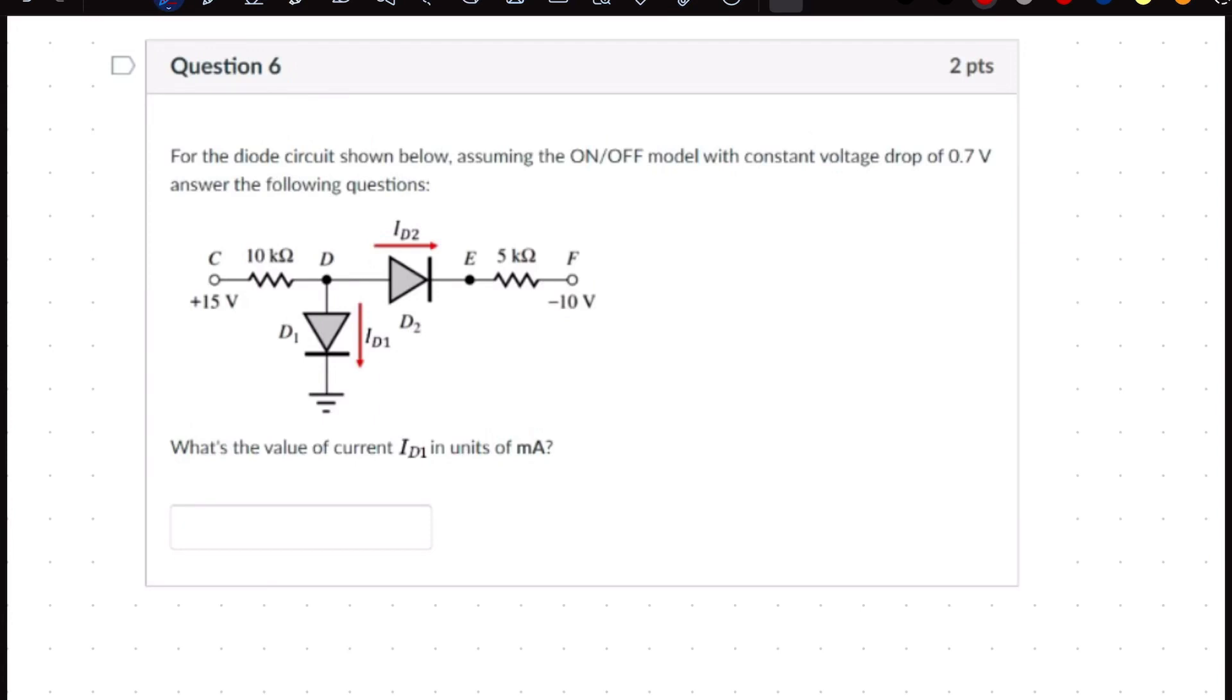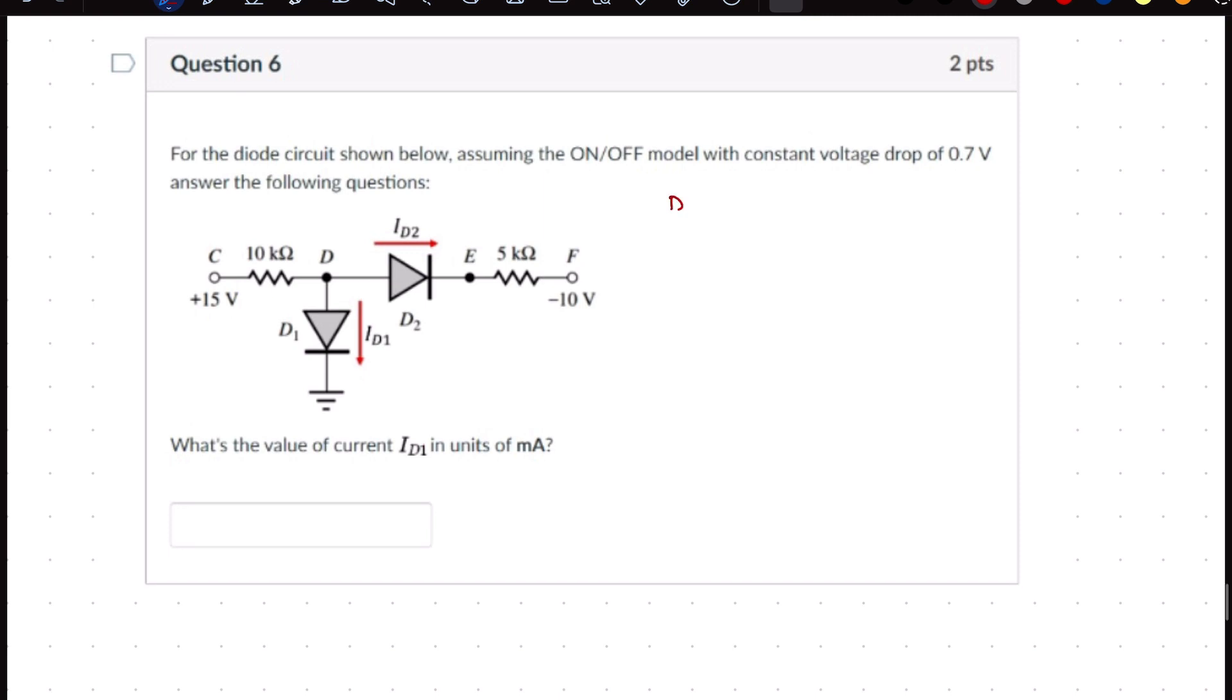This is another basic diode problem asking to find the current flowing through diode D1, that is ID1. As usual, our first approach is to assume D1 and D2 are both conducting.